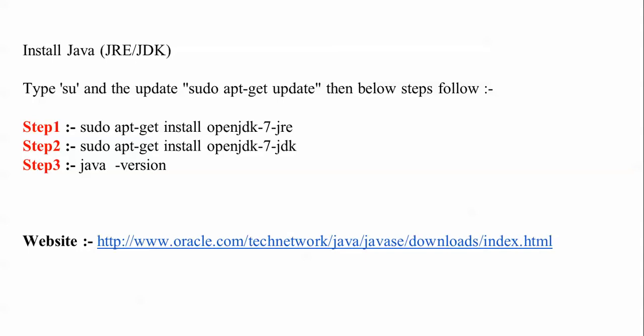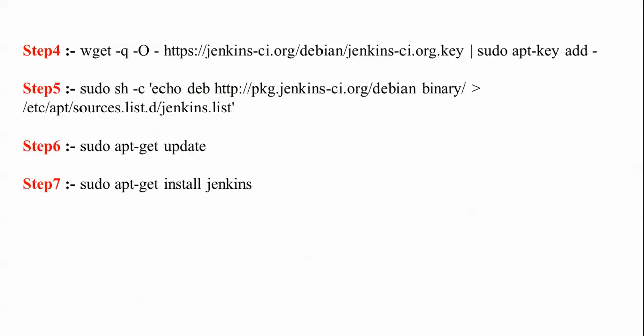After that I'm going to install Jenkins. Steps four through seven are the procedure for downloading Jenkins using wget, then adding the key to Jenkins, then adding the source list, then running an update, and finally installing Jenkins. Let us begin this procedure now.